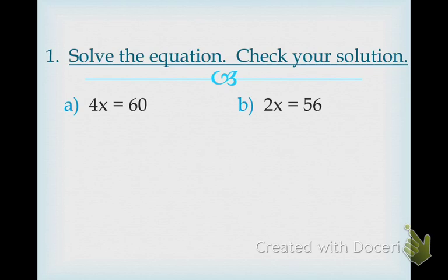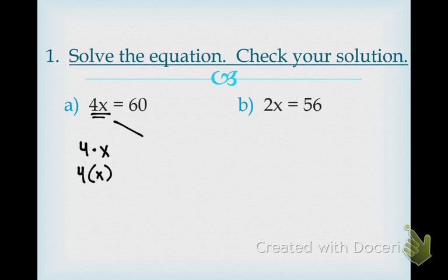Example number one is asking us to solve the equation and then check our solution. The first problem we have is 4x equals 60. Whenever you have a number directly next to a variable, what do you have to do to that number — add, subtract, multiply, or divide it? 4x means the same thing as 4 times x. So we've got to figure out how to get rid of that multiply by 4. What's the opposite of multiplying by 4? Divide by 4.